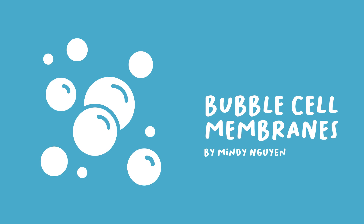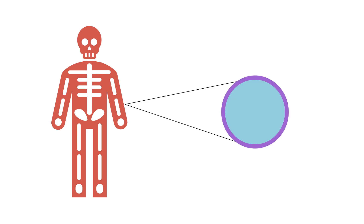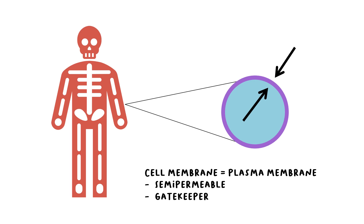There are trillions of cells that make up your body. Each of those cells are surrounded by a cell membrane, also called the plasma membrane. Not only do they hold the cell's shape, they guard what comes in and out of the cell. The membrane is semi-permeable, meaning they act like gatekeepers allowing only select substances to pass through.